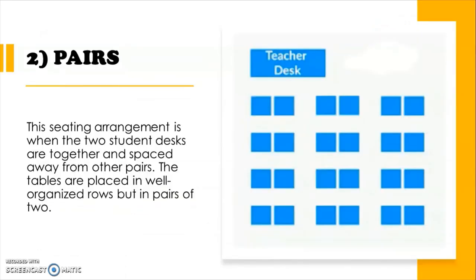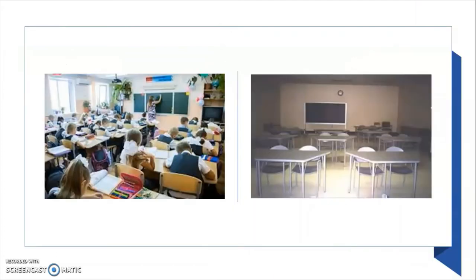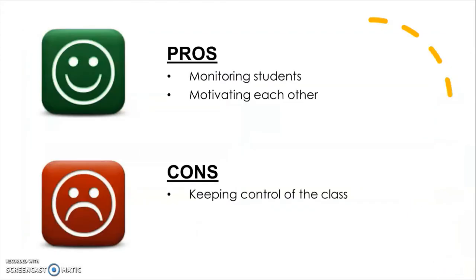The second one is pairs. The seating arrangement is when two students are together and spaced away from other pairs. The tables are placed in well-organized rows but in pairs of two. Pairs allow students to work together and independently — it is more friendly and students can get their heads together when needed. Advantages: this layout allows teachers to walk around the classroom and monitor all students, and students help and motivate each other. Disadvantage: students have the opportunity to talk to each other, so if they get bored it will become too noisy. Therefore, the teacher must keep control of the class.